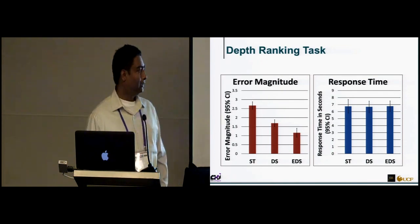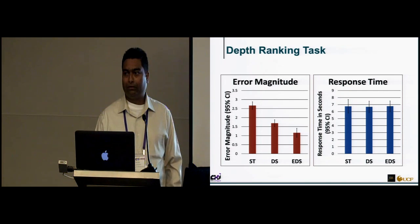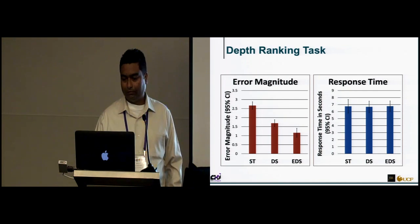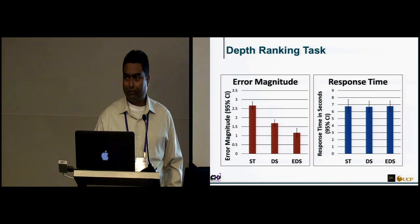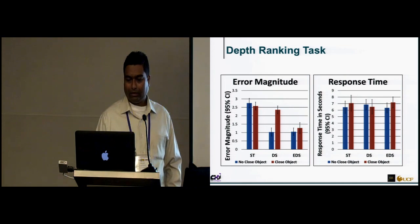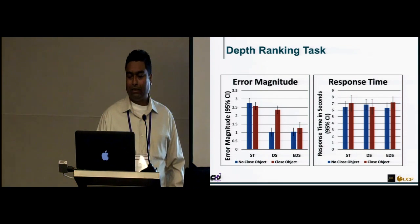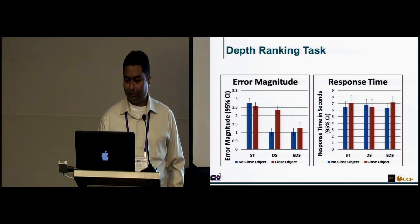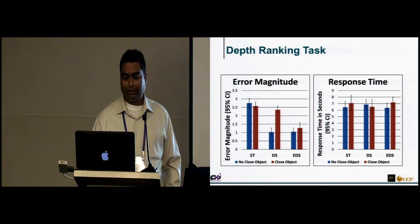For the depth ranking task, error magnitude was much higher for the fixed parameter approach and lowest for eye-tracked dynamic stereo. We did not notice any difference in response time. Looking at object mode, static stereo and dynamic stereo performed similarly when there was a closer object, but when there was no closer object, dynamic stereo and eye-tracked dynamic stereo both had similar performance. Eye-tracked dynamic stereo's performance did not change much whether there was a closer object or not.